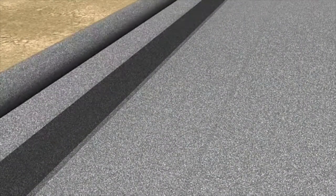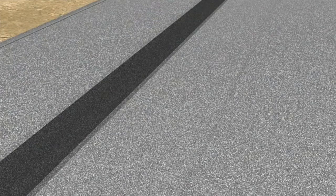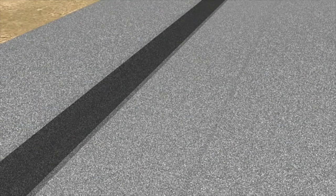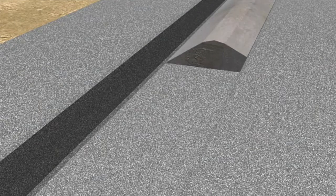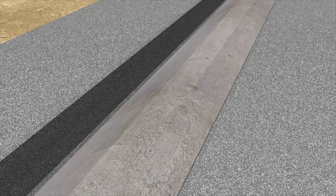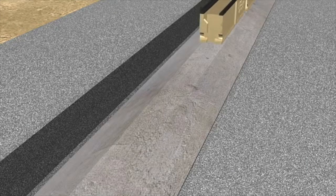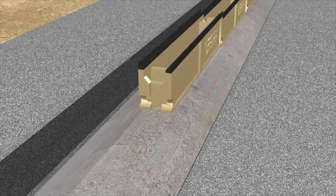The formation is trimmed to level and the geomembrane placed into position beneath the proposed line of perma-treat. A concrete bedding is placed directly on top of the geomembrane. One meter long perma-treat units are set to line and level on the concrete bed.